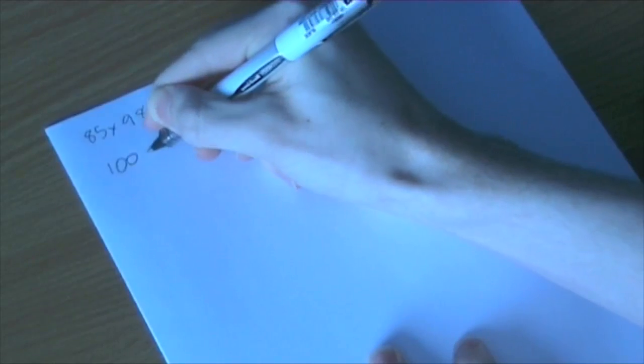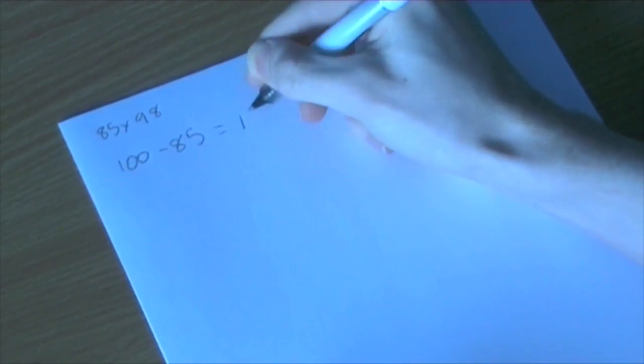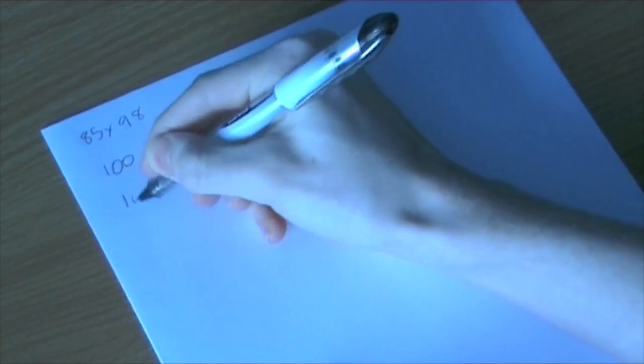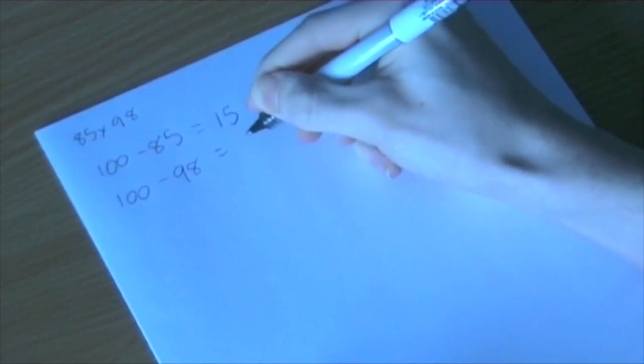But if we did 100 minus 85, nice easy subtraction, we get 15. If we then do 100 minus 98, even easier, we get 2.